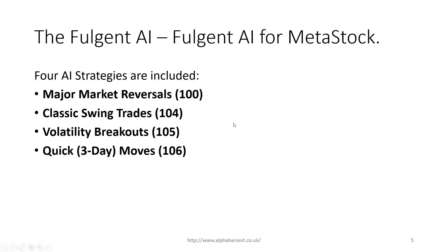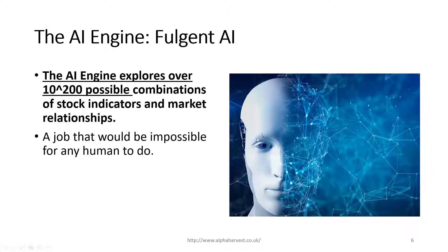These four strategies cater for different trading styles, whether you're a short-term swing trader or a medium-term position trader. The AI does 10 to the power of 200 different possible combinations of stock market indicators and market relationships using genetic algorithms technology. This is a job impossible for humans, so the AI simply goes out there and finds the best high probability trading strategies.